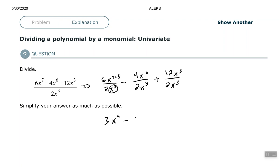Second fraction: 4 divided by 2 is 2, again use the quotient rule—x to the third. And then the third fraction: the x to the thirds cancel each other out, and 12 divided by 2 is 6. And that's how you would divide a polynomial by a monomial.